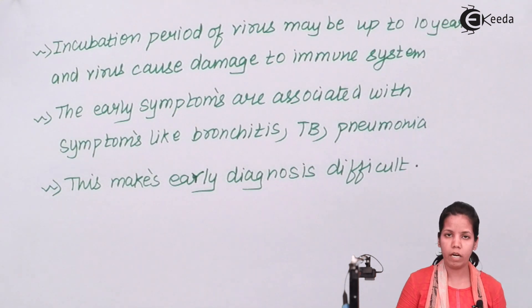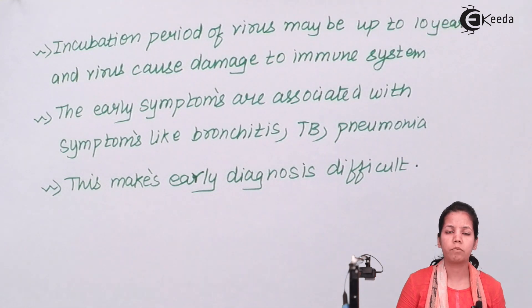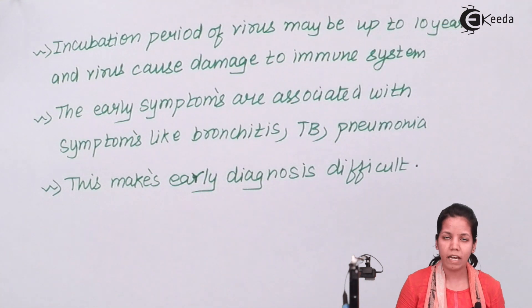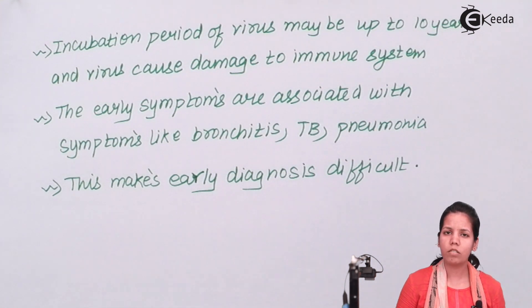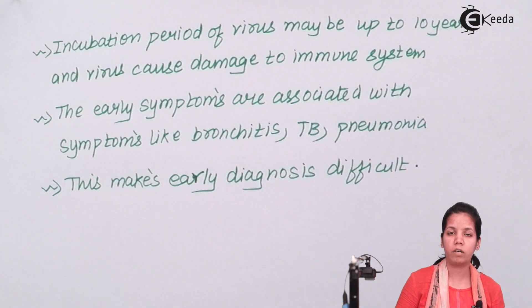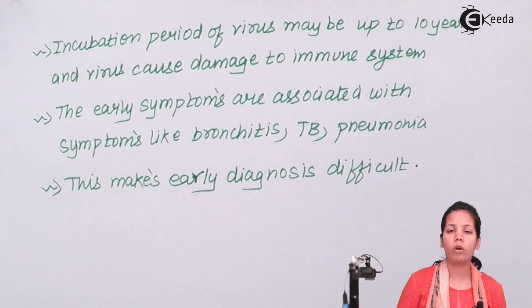Tests for AIDS include ELISA and Western Blot. Western Blot is a confirmatory test, but ELISA is also used for typhoid symptoms and can produce false positive as well as false negative results. Until an individual has developed full-blown AIDS, it is impossible to determine whether the HIV is in its active state or lying in a latent, dormant form inside the individual.